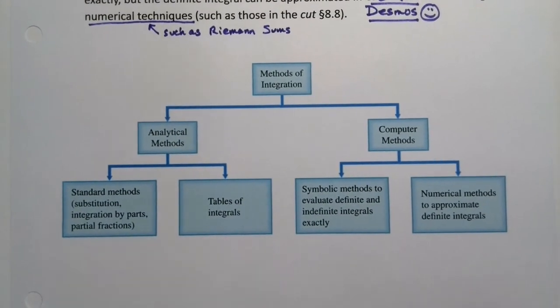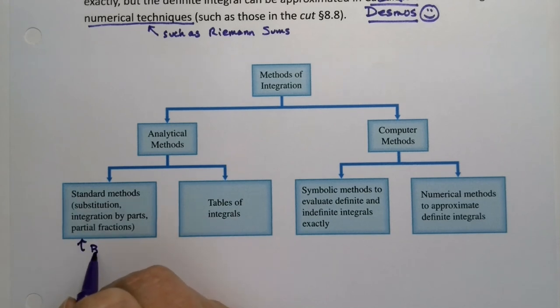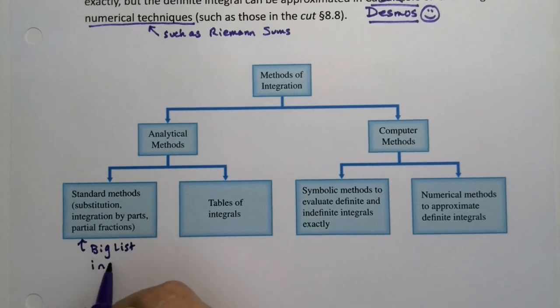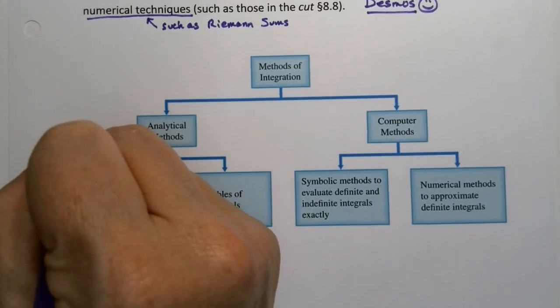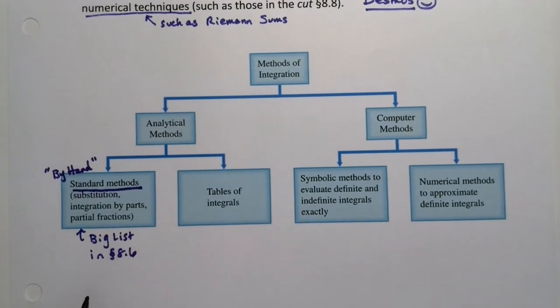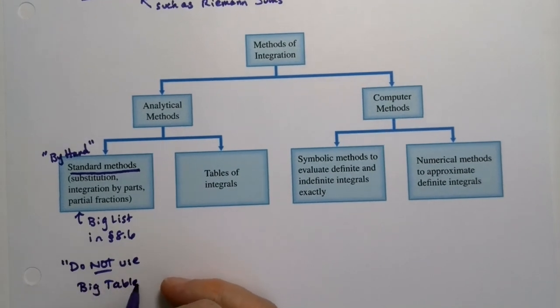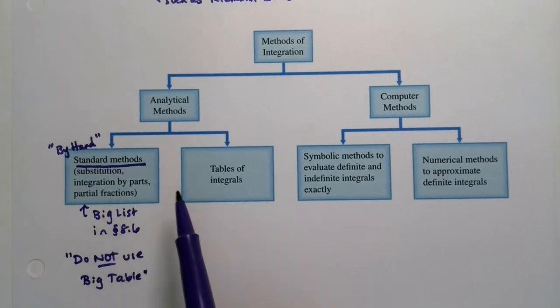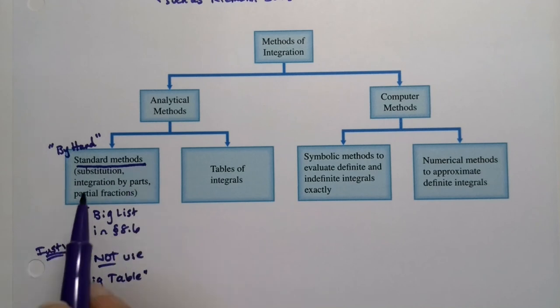So that leads us to integration methods. There are analytical methods. So all the standard methods, substitution, integration by parts, partial fractions, trig substitution, powers of trig, et cetera. There's a big list in section 8.6 of all the by hand standard methods that we can use. So these ones are by hand. So when it says to do it by hand, that's what it's talking about. So these would be do not use the big table because the big table basically cuts out the middle man and gets you to the answer. So in the instructions, it'll say do not use big table.